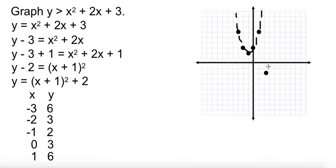Now, I need to pick a testing point. Since I'm in this form, 0, 0 is a good point to pick. 0, 0 is definitely outside of the parabola. Plug it in. 0 is greater than 0 plus 0 plus 3. 0 is greater than 3 is false. So I'm going to shade not here. This was false. I'm going to shade inside.